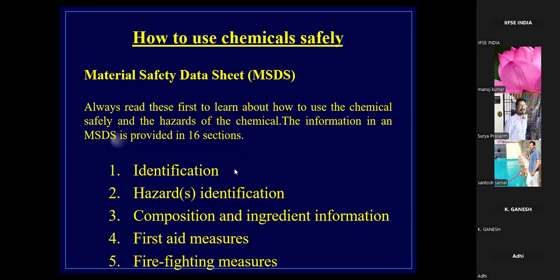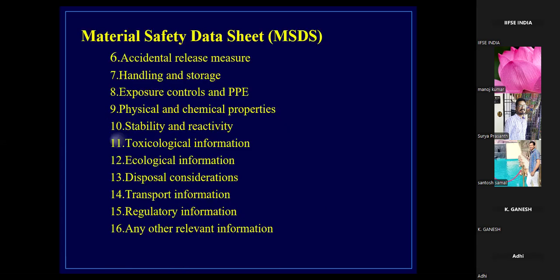The 16 sections of MSDS include: second, hazard identification; third, chemical composition and ingredient information; fourth, first aid measures; fifth, firefighting measures; sixth, accidental release methods; seventh, handling and storage; eighth, exposure control and PPE; ninth, physical and chemical properties; tenth, stability and reactivity; eleventh, toxicological information; twelfth, ecological information; thirteenth, disposal considerations; fourteenth, transport information; fifteenth, regulatory information; and sixteenth, any other relevant information.